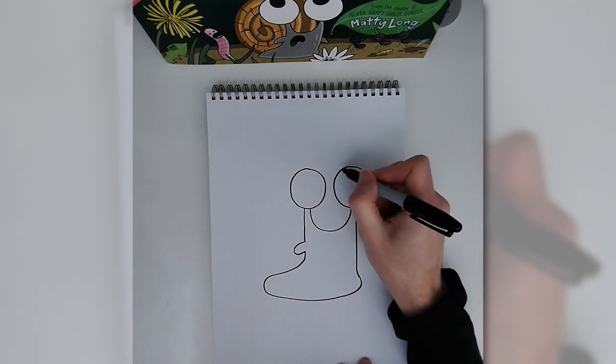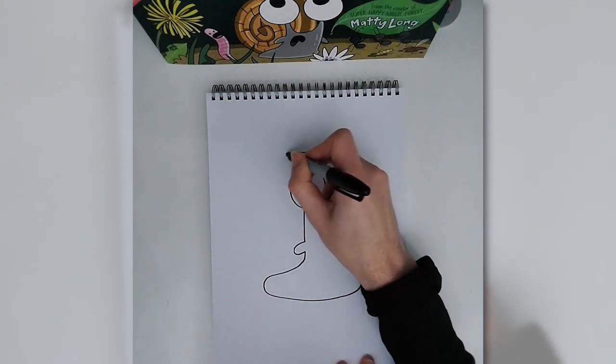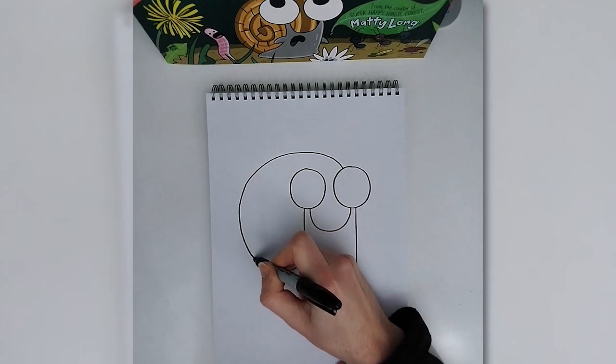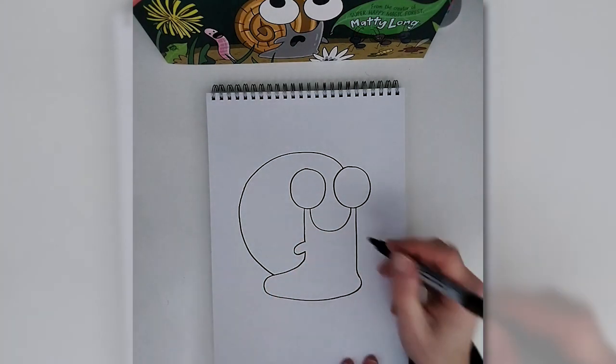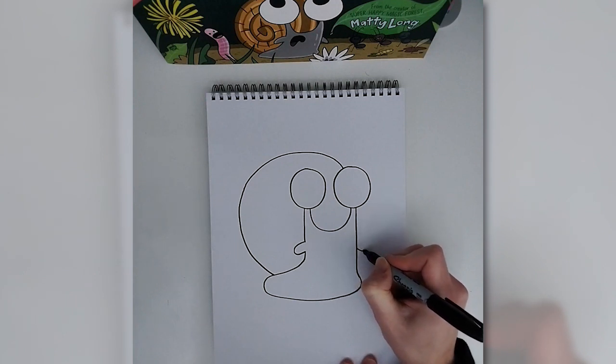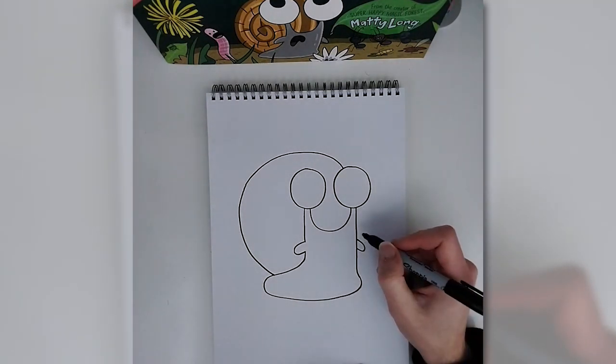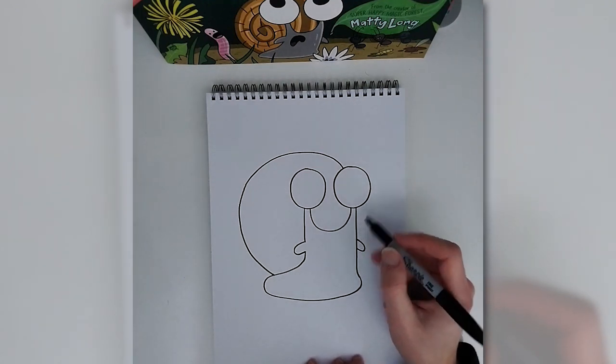For snail's shell, I'm going to start up here, and it's another circular shape. It goes out and curves back in to meet snail there. We can add another bit like that. Snails don't actually have arms, but they have these kind of antennae that I kind of used to work like arms a bit in this book.